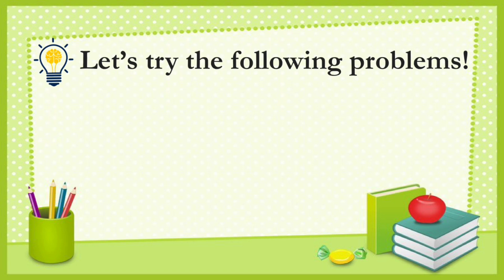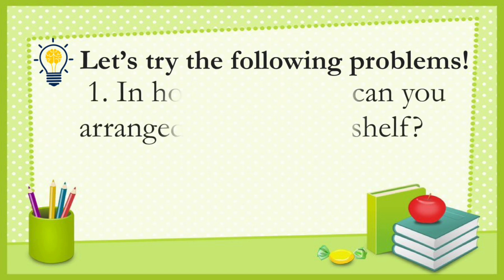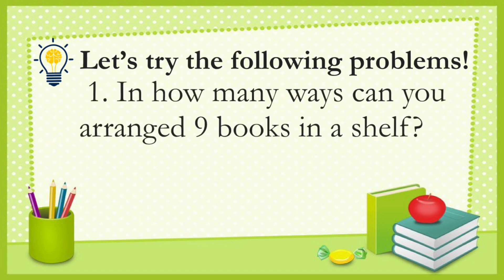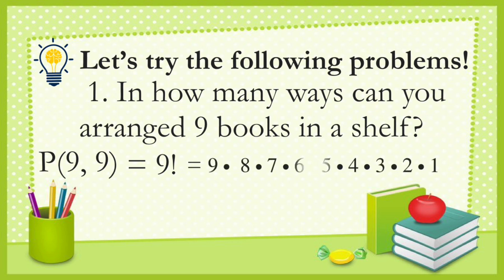Let us try the following problems. Number one: in how many ways can you arrange nine books on a shelf? There are nine books and all are included, so this is the permutation of nine objects taken nine at a time, or nine factorial. That equals 9 × 8 × 7 × 6 down to one.